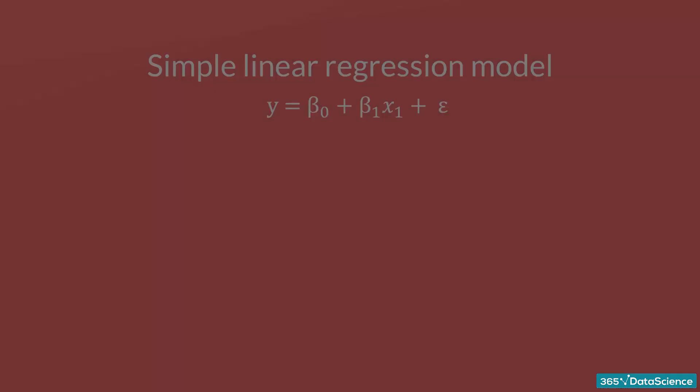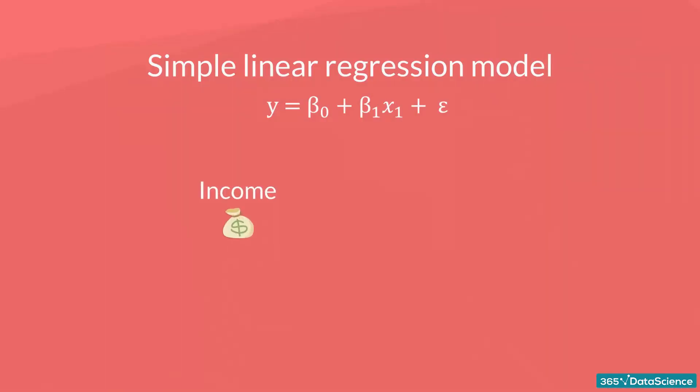Think about the following equation. The income a person receives depends on the number of years of education that person has received. The dependent variable is income, while the independent variable is the years of education.